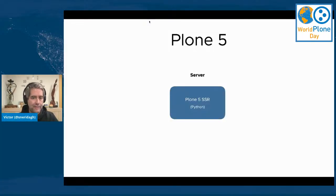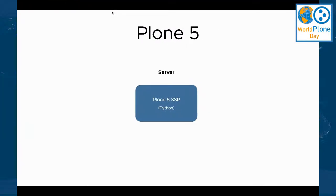So here is Plone 5. It's the classic way of monolithic frameworks and servers. You have a process that is running on Python, and this monolithic server is doing all the work — getting the content from the database, making the required calculations, calculating the template engine and how it should look like, and then sending the HTML to the client that has requested a page.